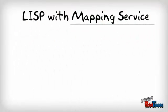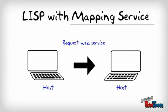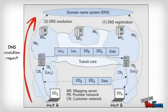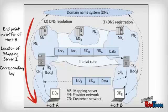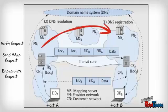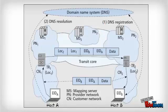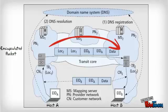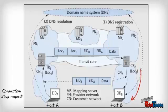As for the mapping service, let's take a look at an example when a host wants to obtain web service provided by another host. After host A has sent out a DNS resolution request, the relevant details will be returned and host A will then send a connection setup request to its tunnel router. The request will be verified if the endpoint identifier of host B is associated with mapping server 2. If so, it will send out a map request and encapsulate the request. The encapsulated packet will be sent to tunnel router 2 and the connection setup request will be sent to host B.